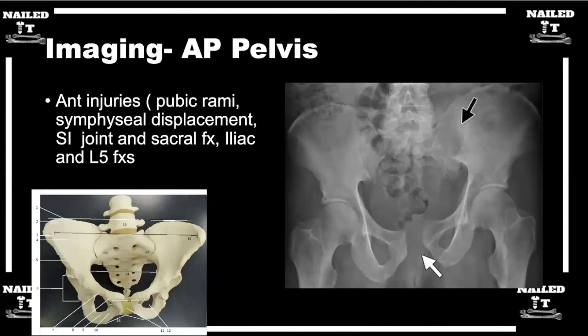Are there any telltale signs as far as flexion versus extension of a hemipelvis? One of our attendings, Dr. Martin, will say you can look at the obturator foramen — if they're not symmetric, just like you're looking for symmetry overall, that can kind of clue you in that one hemipelvis may be flexed versus extended. Do you look at that as well?